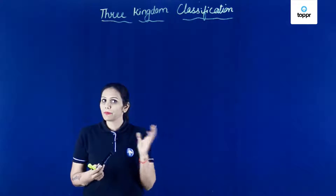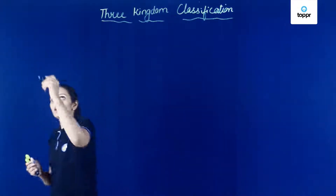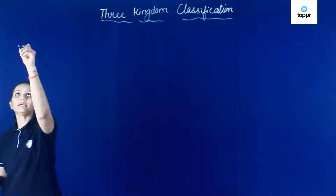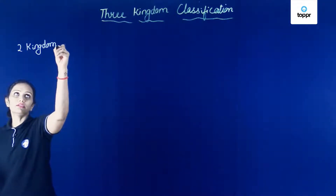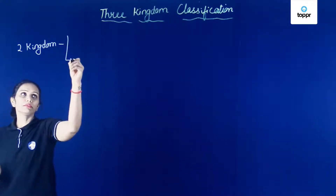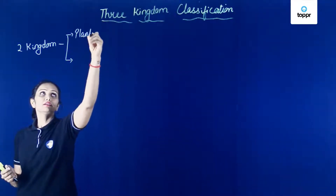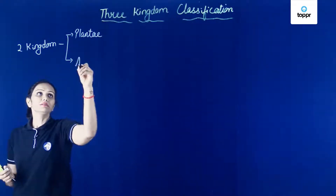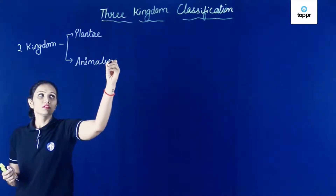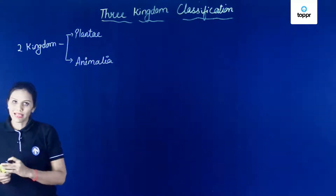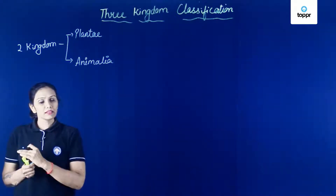Isse pehle humne padha tha two kingdom classification, jo ki Linnaeus ne diya tha. According to two kingdom classification, there were two kingdoms given by Linnaeus: Kingdom Plantae and Kingdom Animalia, jo ki before 1869 diya gaya by Linnaeus.